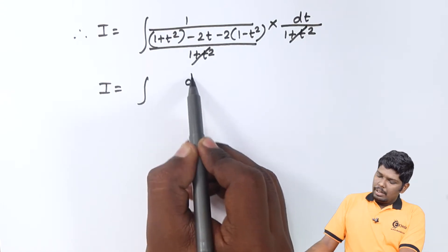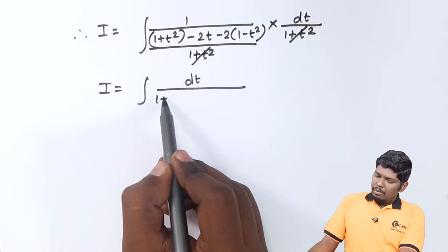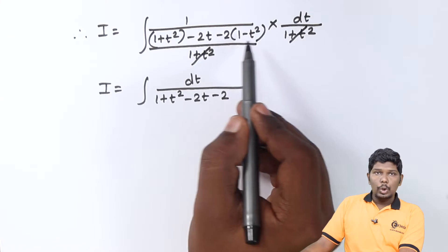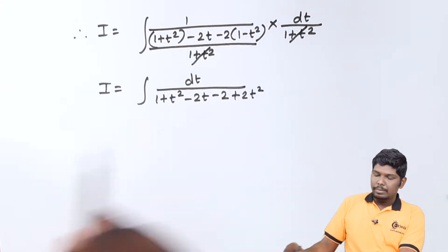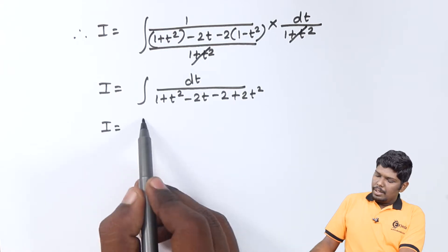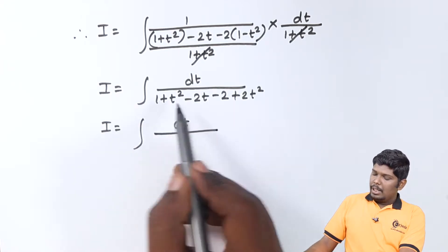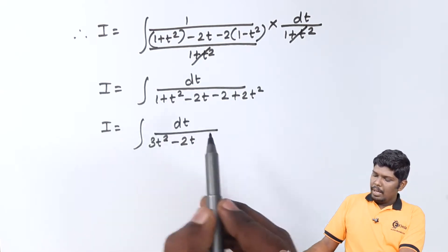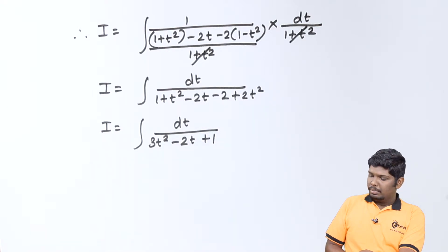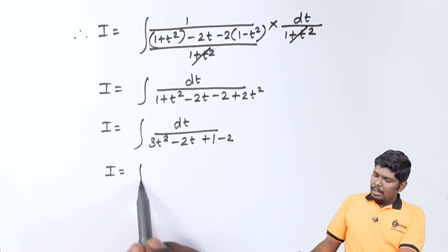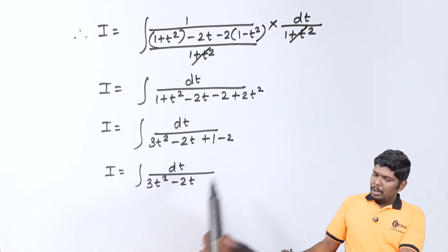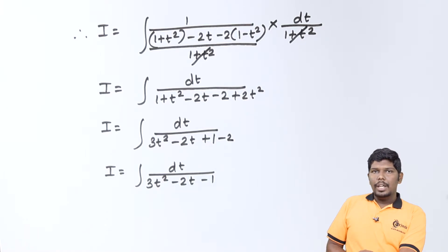Now let us simplify the denominator to get a quadratic equation. I will be integral dt upon [(1 + t²) minus 2t minus 2·(1 − t²)]. Expanding: 1 + t² minus 2t, and minus 2 times minus t² gives plus 2t². So we get integral dt upon (3t² minus 2t minus 1). Now our quadratic equation is ready.